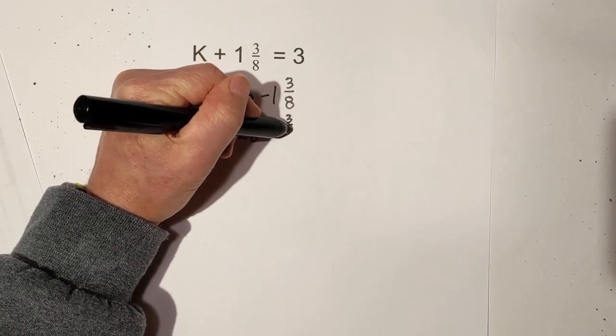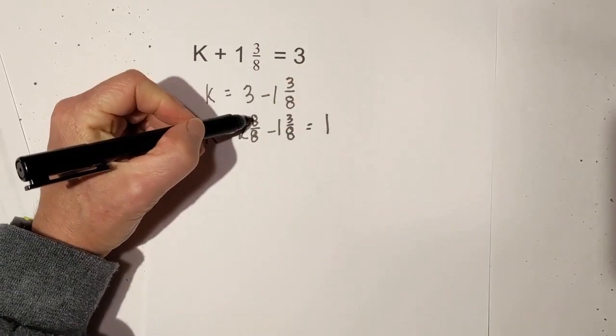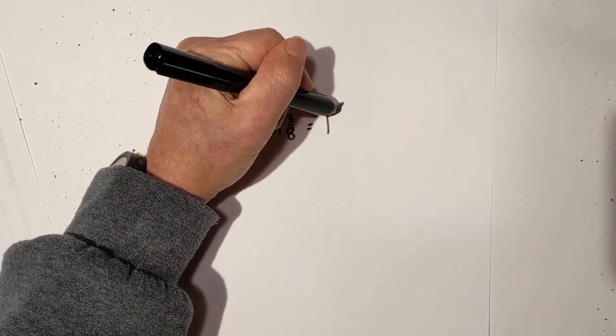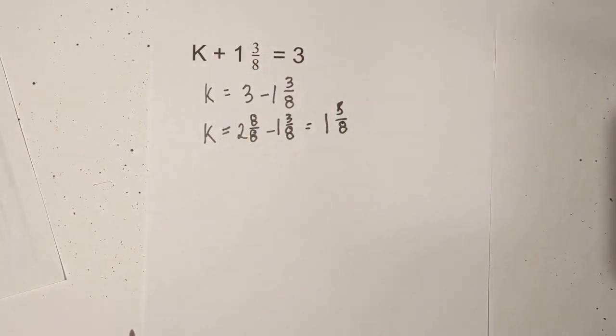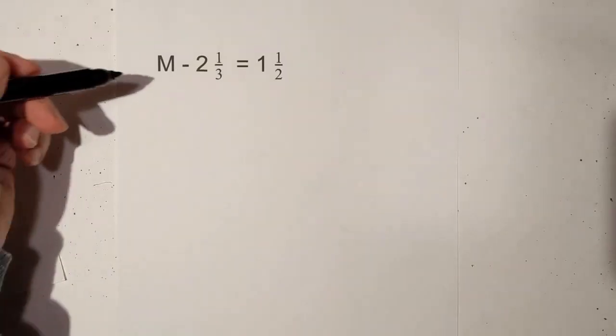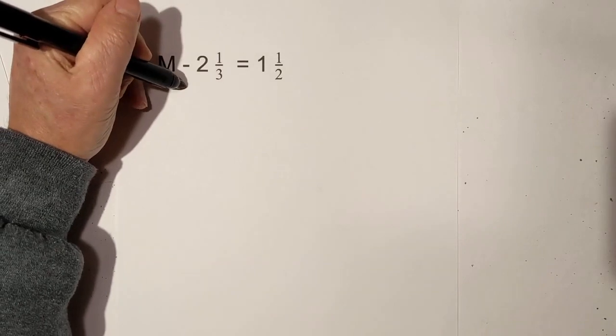Now we have 2 minus 1 is 1, 8 minus 3 is 5, all over 8. So that's another technique if you would like. Let's look at the next one. Notice that we have subtraction, so in order to undo subtraction, we're going to add 2 and 1 third to each side.